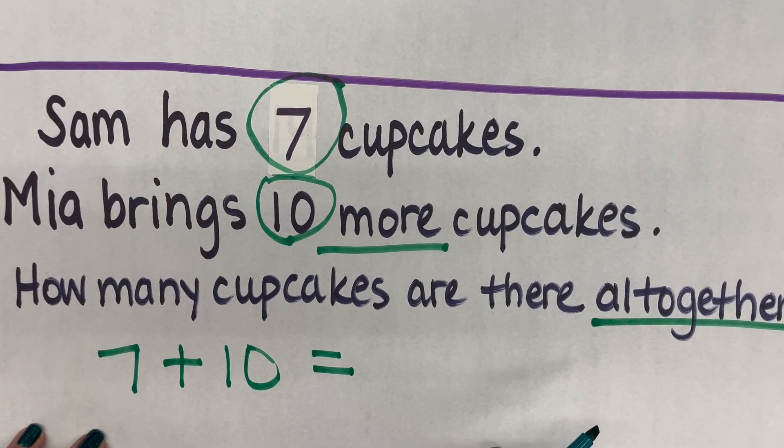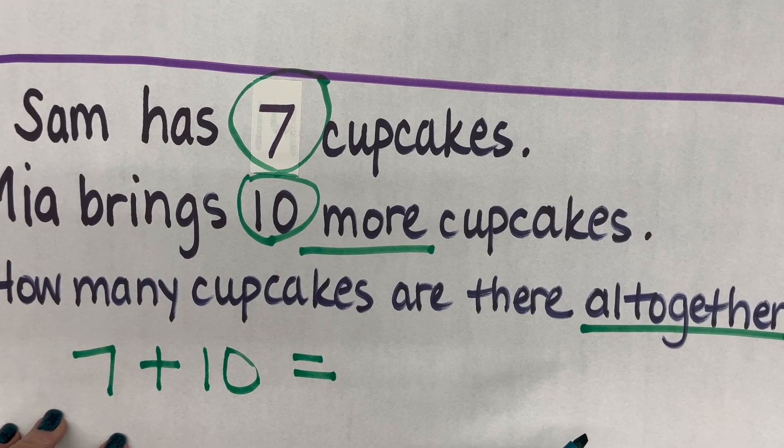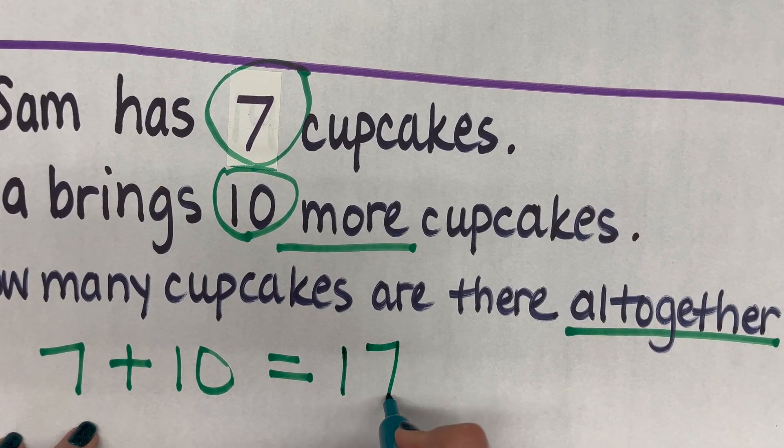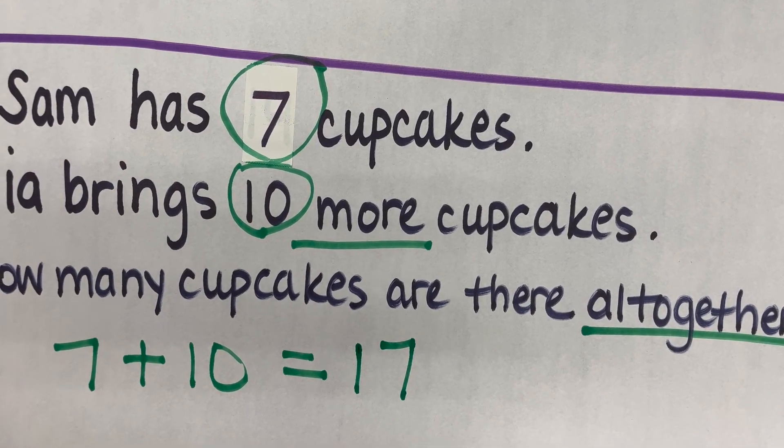And then considering a related fact, 10 and some more gives me a teen number. So 7 plus 10 or 10 plus 7 would give me 17. I could also draw out a picture to help me.